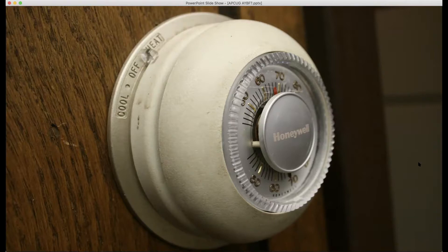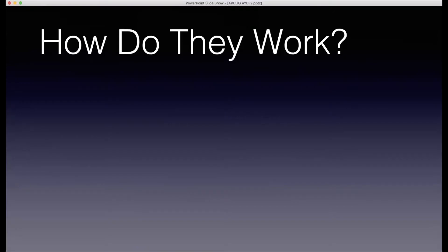His data showed that people had two ideas about how thermostats work — he referred to these as 'folk theories,' I call them mental models. The first group held what he called the valve theory. In a lot of houses, the temperature fluctuated a lot during the day, corresponding with changes in the thermostat setting — people would set it to 80 degrees for a while, then down to 60, then 70, keep changing it.